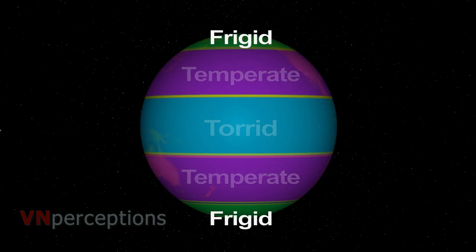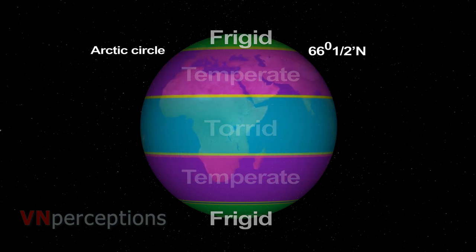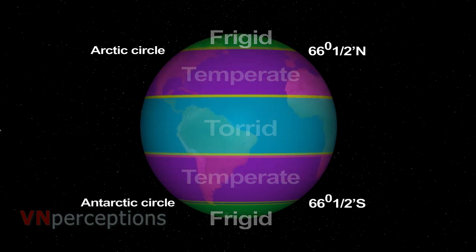The frigid zone in the northern hemisphere lies beyond the Arctic Circle. In the southern hemisphere, it lies beyond the Antarctic Circle. The rays of the sun in these regions are slanting, so it is very cold throughout the year.